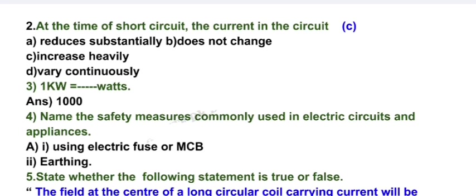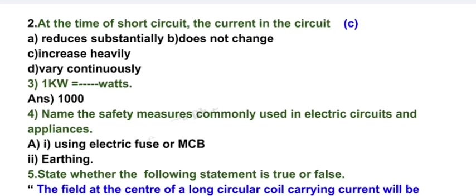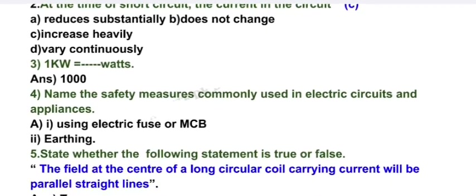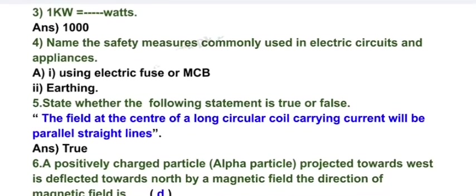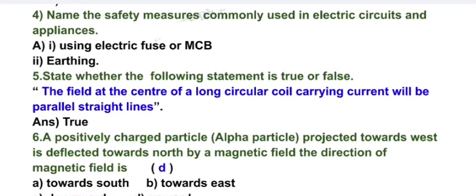Name these safety measures commonly used in electric circuits and appliances: using electric fuse or MCB, number two earthing. State whether the following statement is true or false: the field at the center of a long circular coil carrying current will be parallel straight lines. Answer: true.